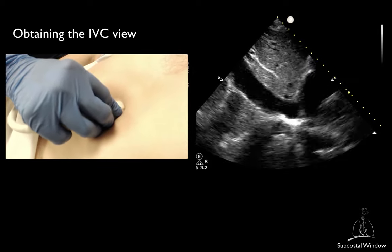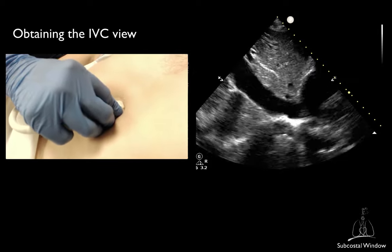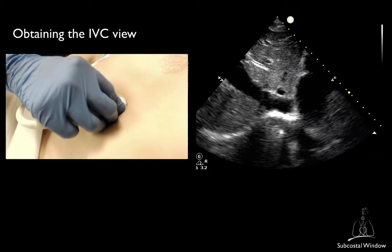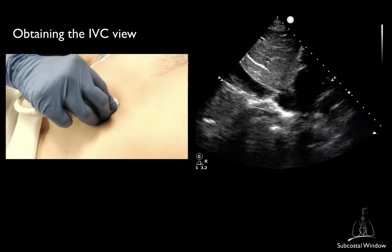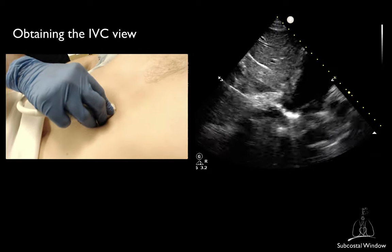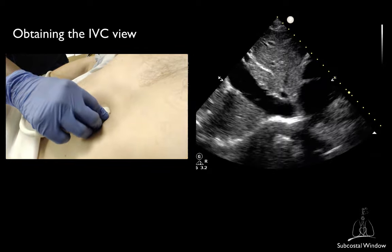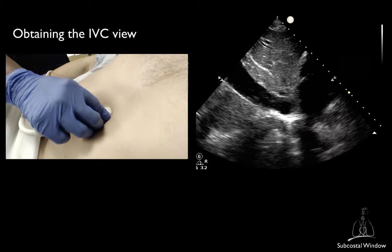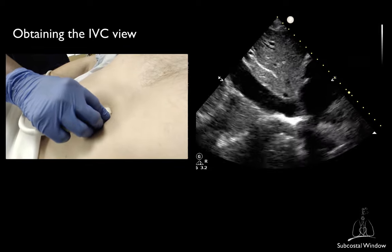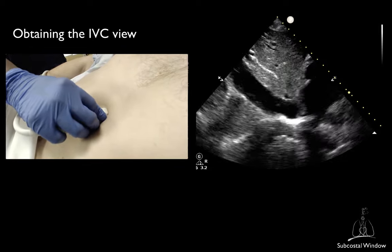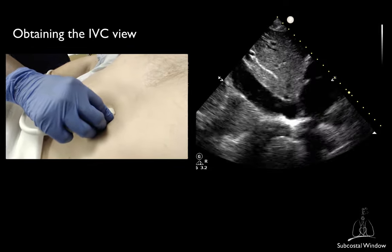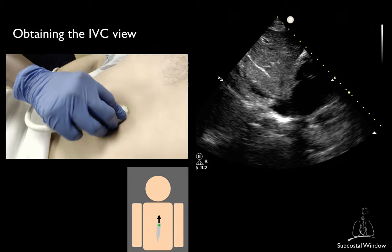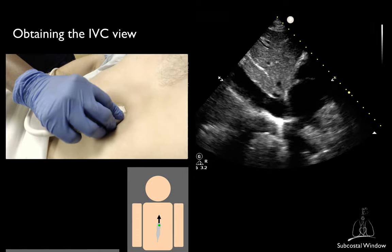Sometimes a slight tilting in either direction may also help. You should be able to see the IVC-RA junction and the hepatic vein. If you cannot see the IVC-RA junction, try to slide cephalad on the abdomen or rock the probe cephalad.